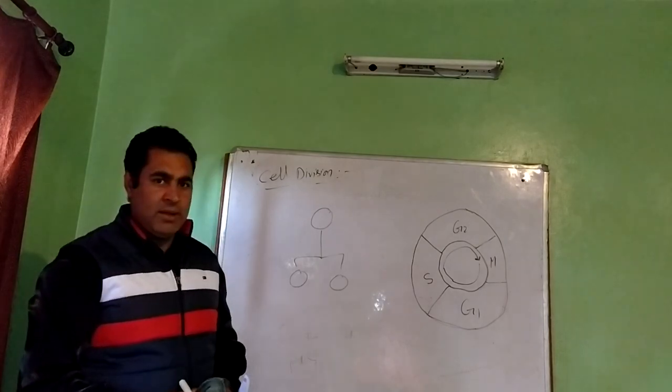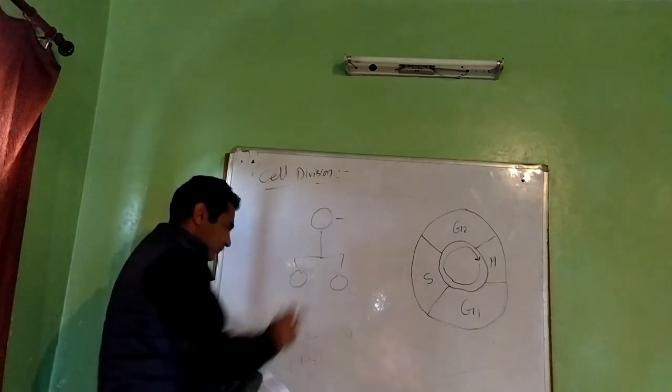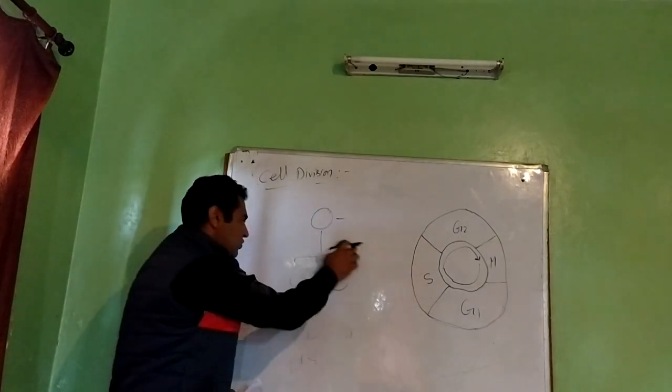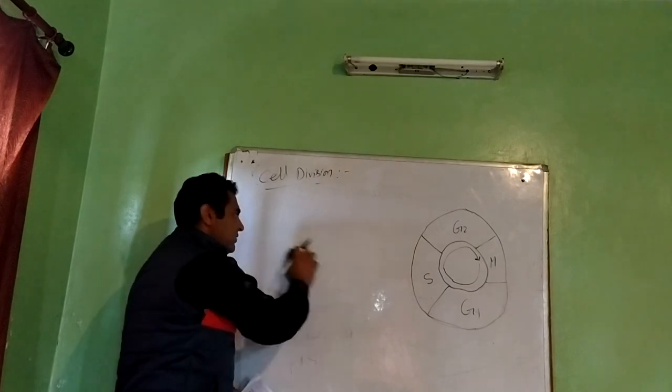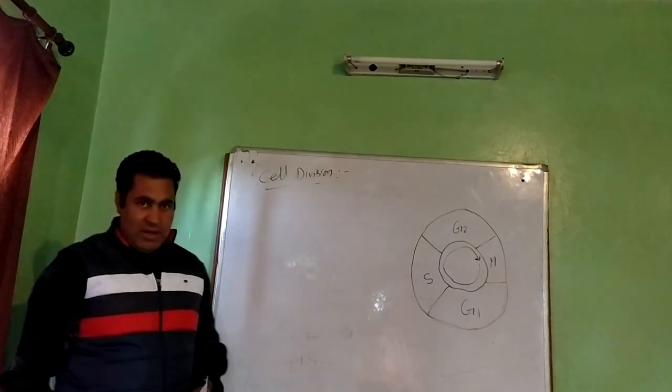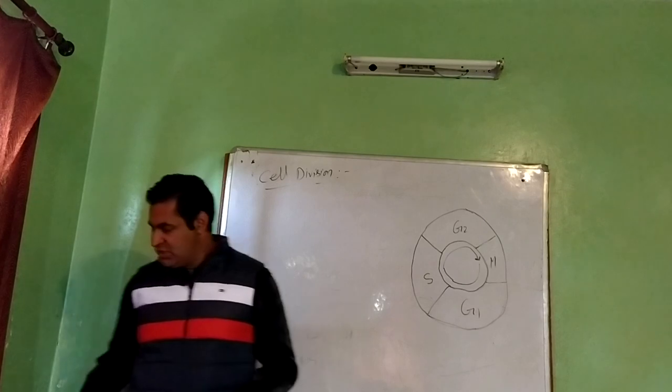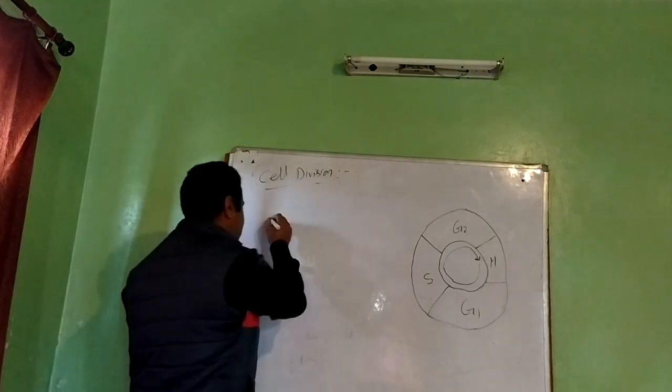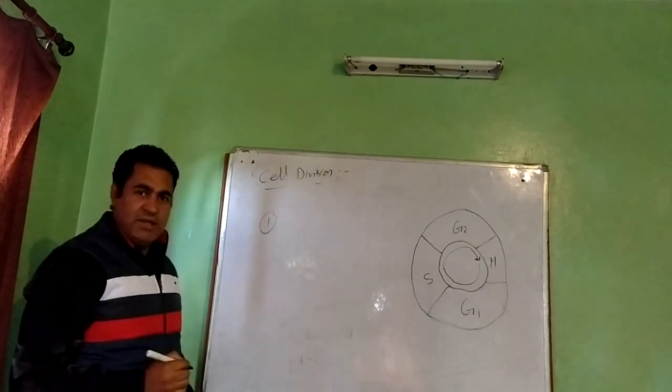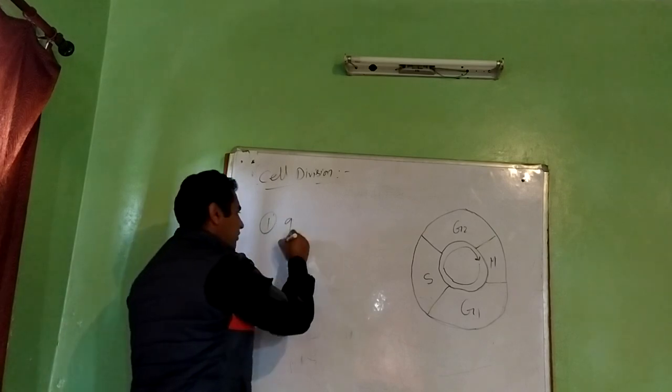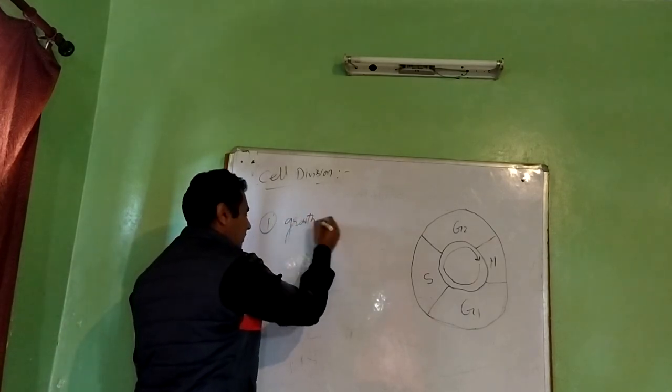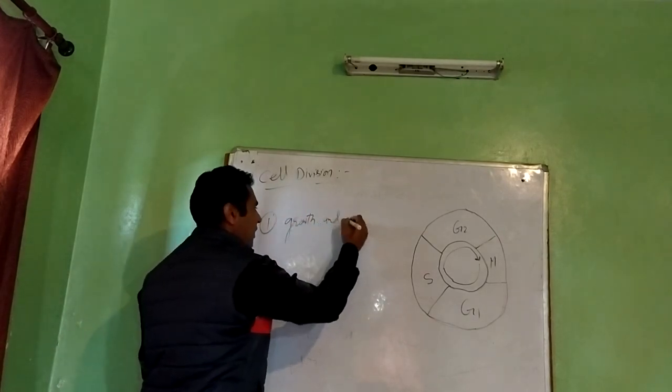That pre-existing living cell will give rise to two daughter cells. So the requirement is that we should have a living cell. Why do we need this division process? First and foremost is for growth and development.